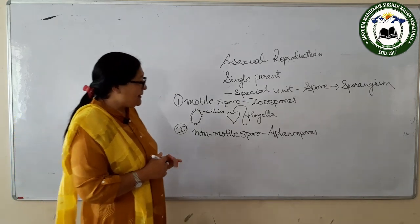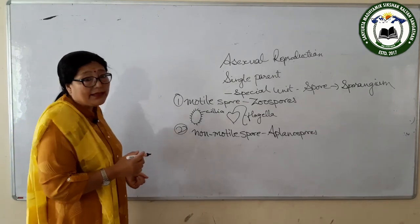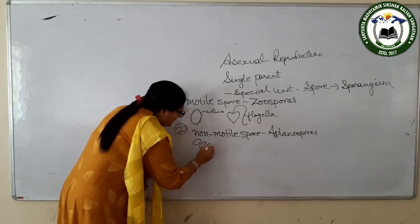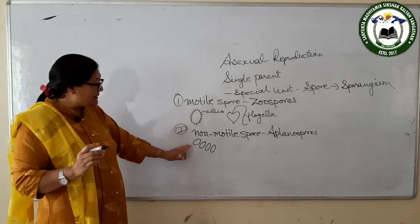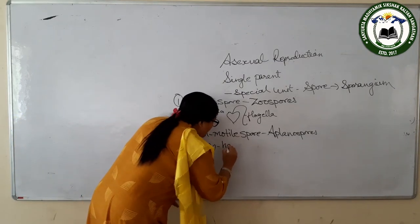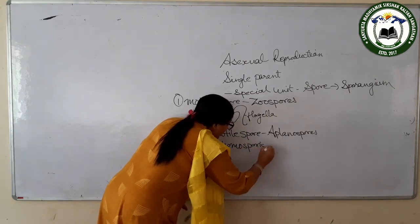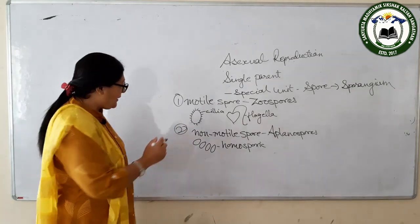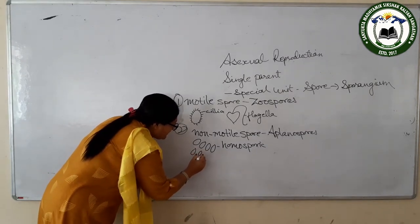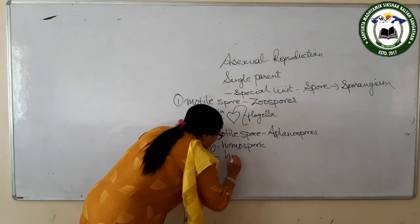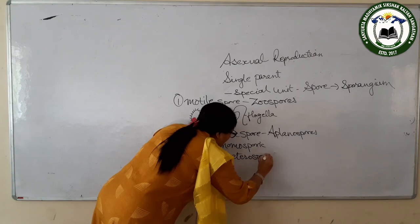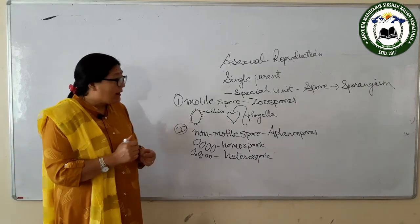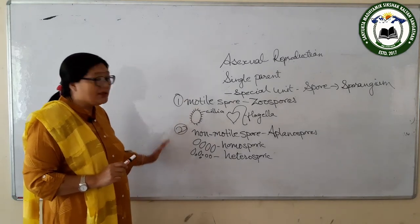If a plant produces the same type of spores, that plant is called homosporic. If the spores are of different types, that plant is called heterosporic — 'homo' means same and 'hetero' means different. These are the types of spores in asexual reproduction.